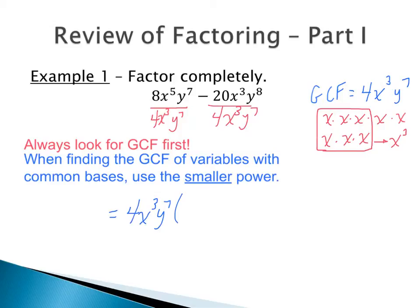For the first term: 8 divided by 4 is 2; x to the fifth divided by x to the third — subtract exponents, 5 minus 3 — gives x squared; y to the seventh divided by y to the seventh is y to the zero, which is 1. For the second term: 20 divided by 4 is 5; x to the third divided by x to the third, 3 minus 3 is 0, so that's just 1.